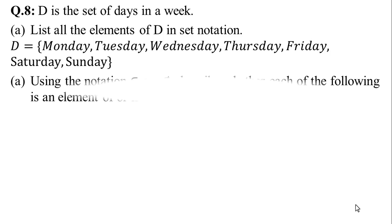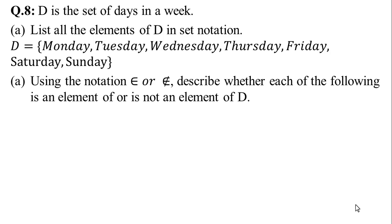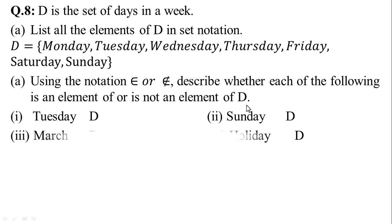In part B, we can solve using the notation 'belongs to' (element of) and 'not belongs to' (not an element). Describe whether each of the following is an element or not an element of set D. We have four parts: Tuesday, Sunday, March, and Holiday. Tuesday is an element of D, so we write: Tuesday belongs to D.